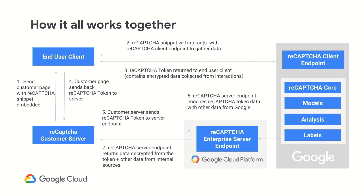For folks who are on V3 or any version of reCAPTCHA, really the only change you have to make is: the end user client and the reCAPTCHA endpoint will have a little conversation, a token will be generated and sent back to the reCAPTCHA customer server. From there, instead of sending that to the reCAPTCHA assessment call to be decoded, you'll send it to a GCP reCAPTCHA Enterprise endpoint. It's basically a one line of code change, and it'll work in more or less the same way, except you just get more data back.